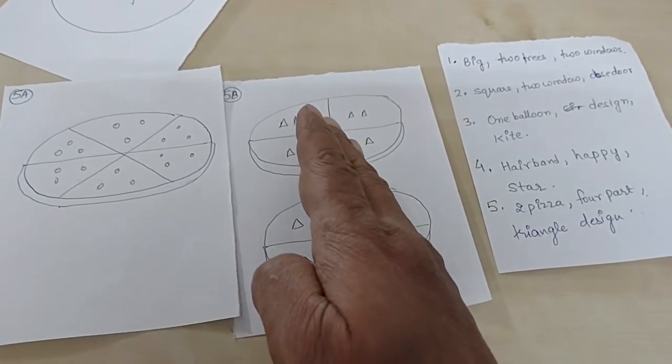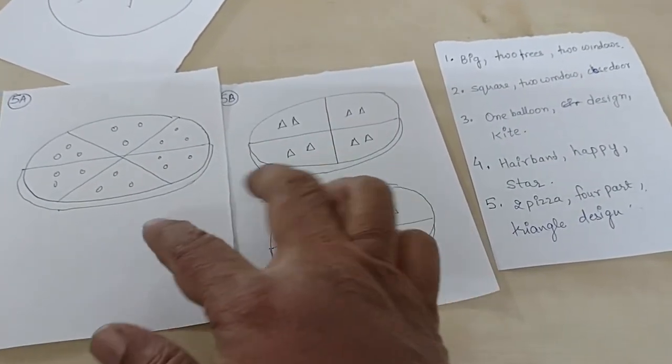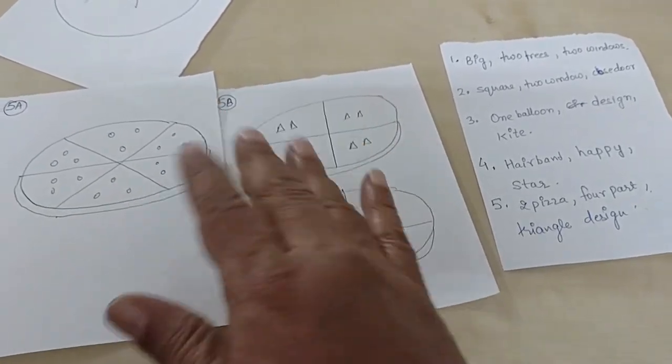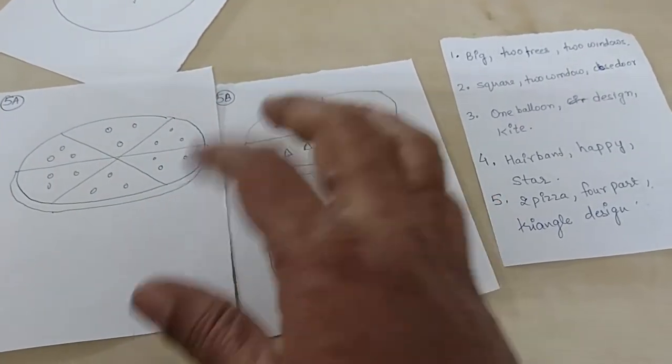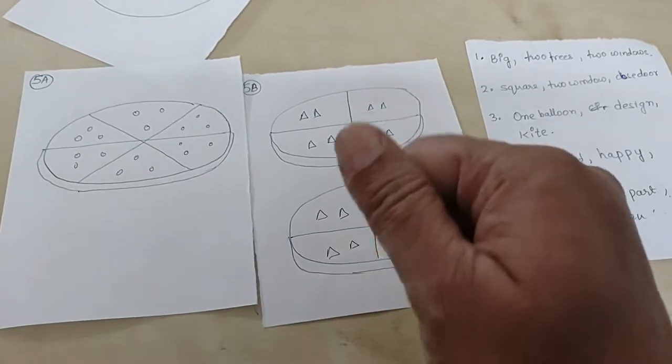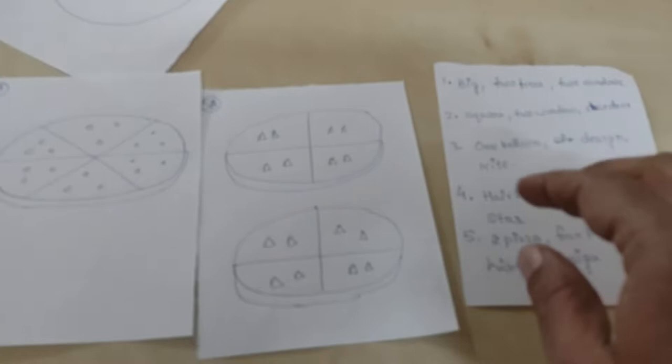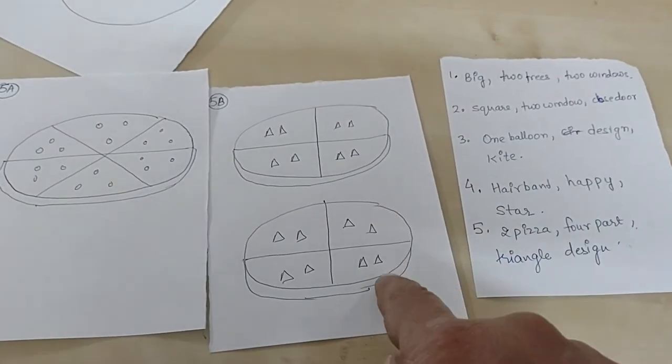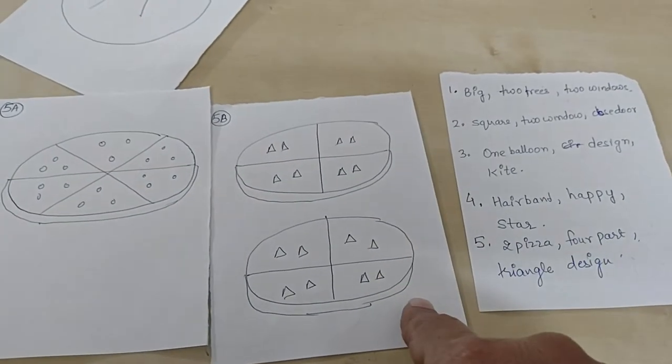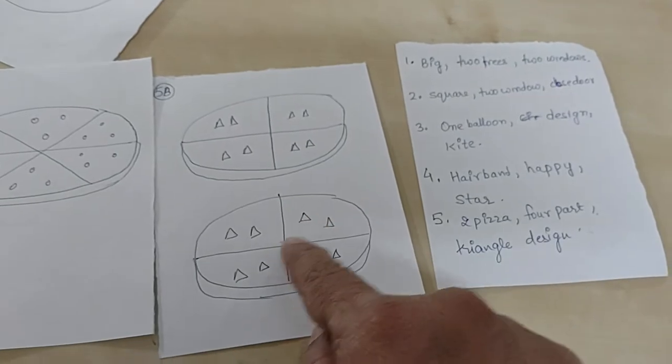Previously I tried like A, B, A, B, then he was very confused and not able to do this practice. That's why to simplify this practice, now I am trying to teach the child only the B has. B has two pizzas, B pizza cut in four parts, B pizza design is a triangle in shape.